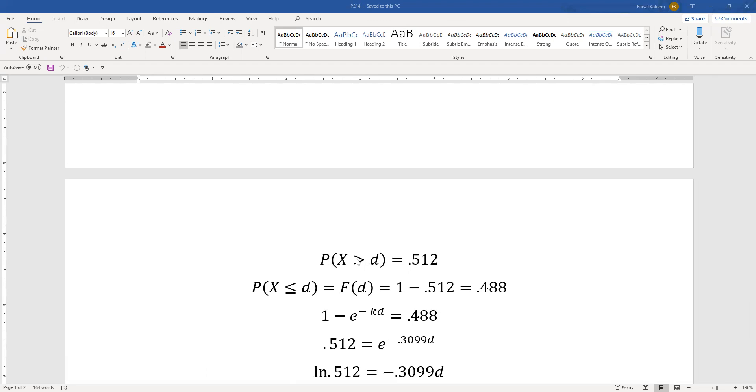We know the payment will happen if the loss is greater than the deductible. So again, we change it to less than or equal to so that this becomes F(d). So P(X ≤ d) = 1 minus 0.512 = 0.488. Now we substitute d into the CDF, so